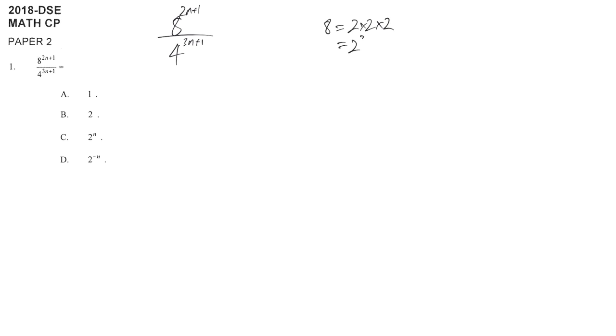That means you can represent 8 as 2^3, and at the same time, 4 is 2 times 2, which means 2^2. So you can express both bases as powers of 2, which gives us a chance to simplify later.